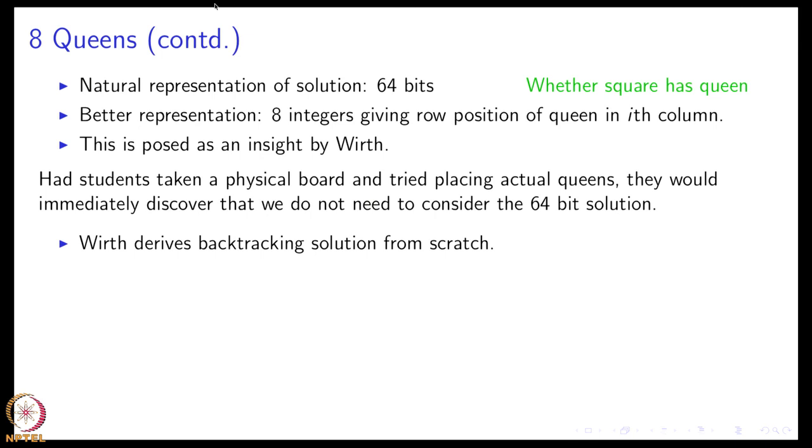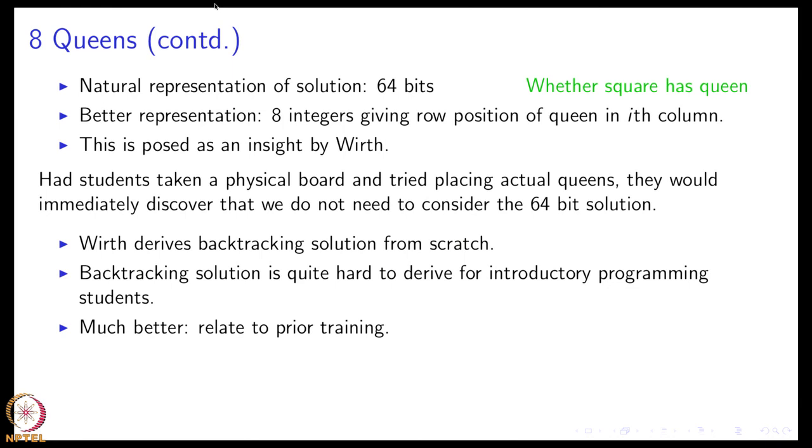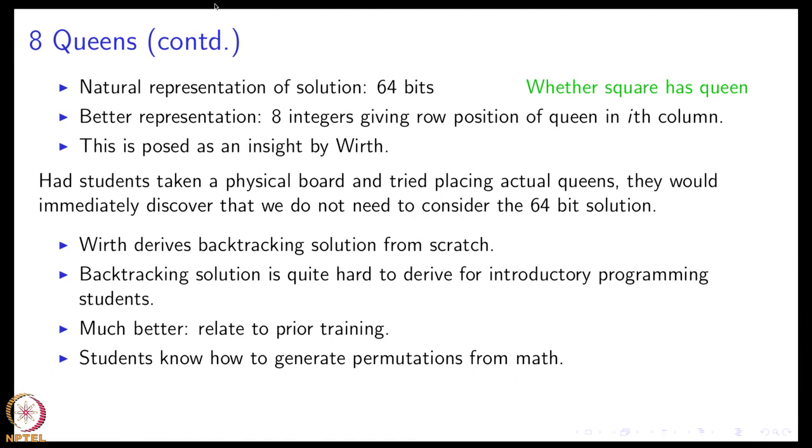So it is somewhat complicated. The point is that you certainly cannot expect students to derive or to invent this solution. And because it is taught typically in an AI course, artificial intelligence course in some later semesters, we can agree that it is not an easy thing. So what should you do then? So backtracking solution is quite hard to derive, but it is not that difficult if you relate it to prior training. What do I mean by that? Well, students have been taught permutations and combinations in mathematics courses. So how do you generate permutations of 5 numbers or 5 people in 5 chairs? That kind of thing people have been taught.